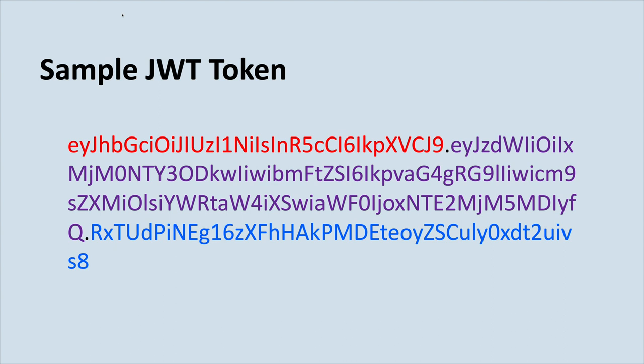As we can see, there are three distinct parts to this one very long string, and the parts are delimited by a period or dot — I'll use those interchangeably. There's the first part in red, the middle part in purple, and the last part in blue. We can't easily read them because these parts are base64 encoded.